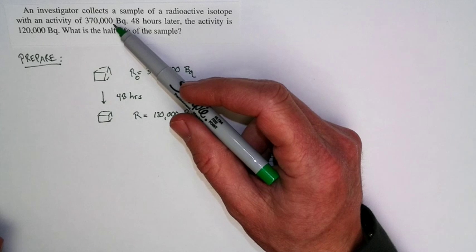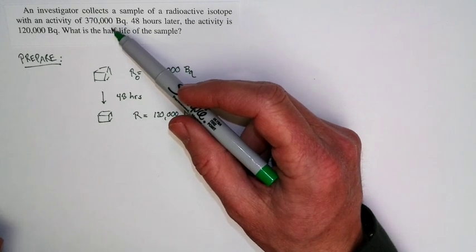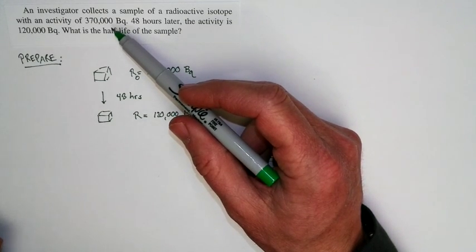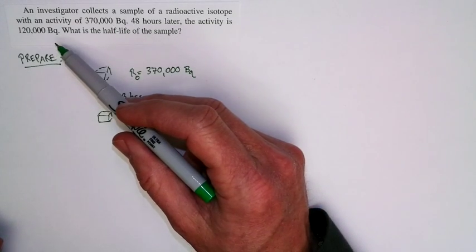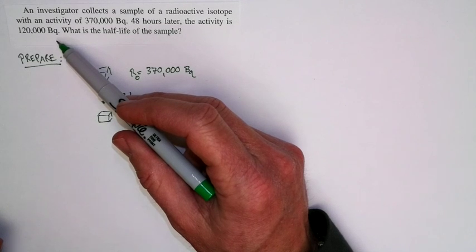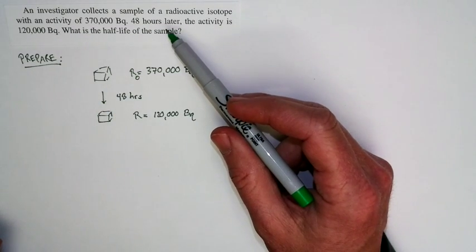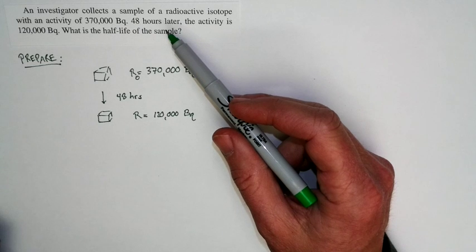after one half-life, it's down to about 185, and after another half-life, it's down to about just over 90,000 Becquerels. This is actually 120,000 Becquerels. So 48 hours is a bit less than two half-lives,